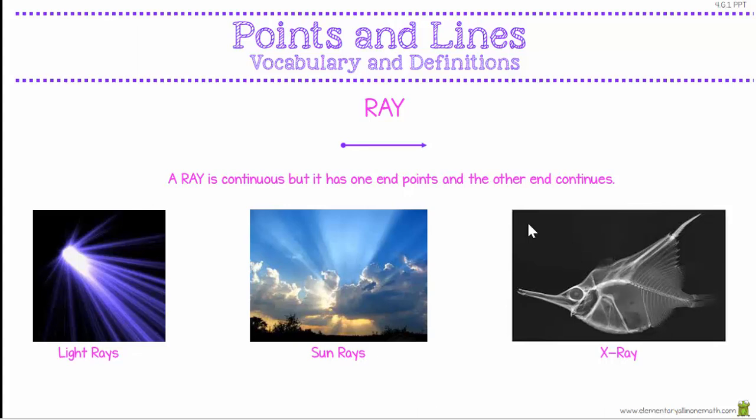A ray. A ray is continuous but it has one end point and the other end continues. Rays are actually a little bit harder to see. If we look carefully we can see light rays, or we can see the sun rays peeking through the clouds. We often can't see x-rays, but we can see what they cause — they can give us an x-ray of the inside of a fish, but the actual x-rays are invisible.